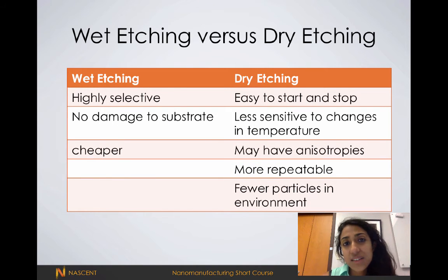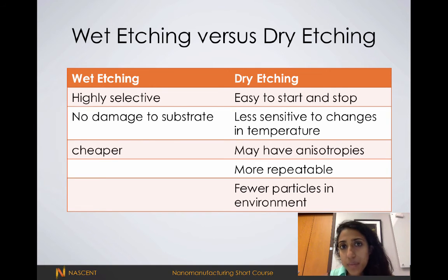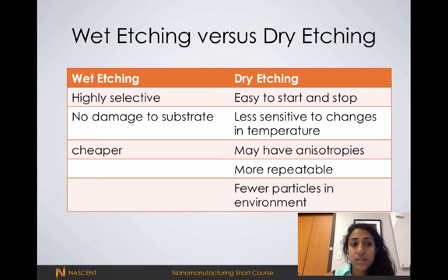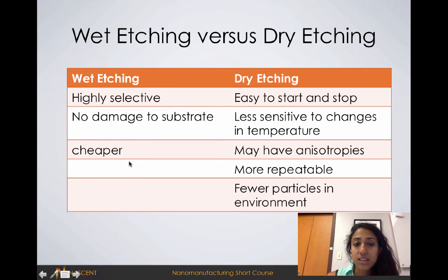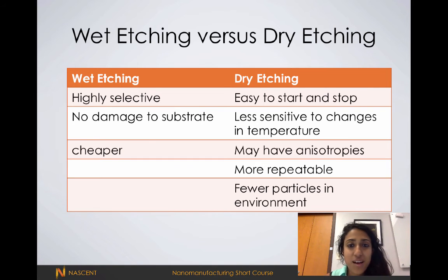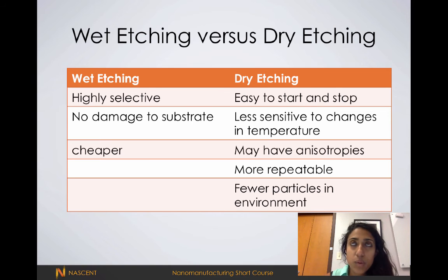Both wet etching and dry etching have pros and cons. Because wet etching is primarily chemical, it's highly selective — selectivity means that if we're trying to etch one material and not the other, as in our photolithography lab where we etched the exposed resist and not the unexposed, it's very selective. Wet etching doesn't cause much damage to the substrate, and it's more inexpensive because it doesn't require a power source or a big plasma chamber. Dry etching is really easy to start and stop, less sensitive to changes in temperature, and it's easier to get really anisotropic features. Dry etching is generally more repeatable, and because it's usually done at lower pressures, there are fewer particles in the environment, making it a much more controlled environment than wet etching.